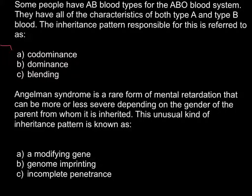Some people have AB blood types for the ABO blood system. They have all the characteristics of both type A and type B blood. The inheritance pattern responsible for this is referred to as — and here are three answers that you might choose from.